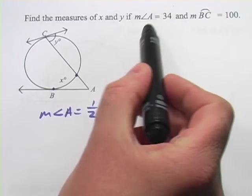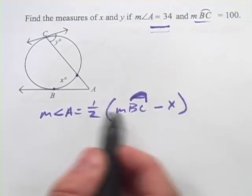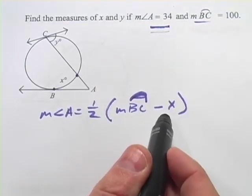They're giving us the measure of angle A, and they're giving us the measure of BC, so we can simply plug those in and solve for x. That's the first step.